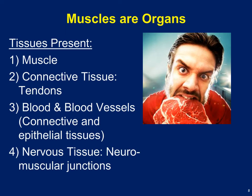Most muscles require a pretty good blood supply, so we have both blood vessels and blood — consisting of both connective tissue and epithelial tissue. And remember that skeletal muscle will only contract when signaled to do so by neurons, so we have a lot of nervous tissue associated with muscle as well. The big picture is that muscles are in fact organs, and we have a lot of them.